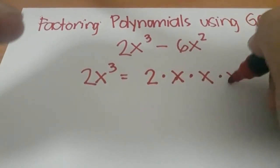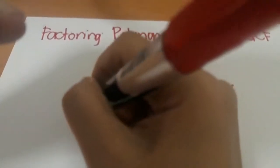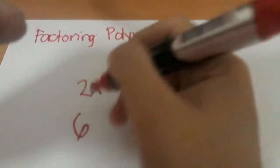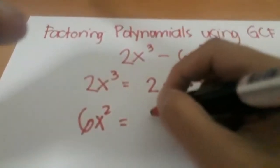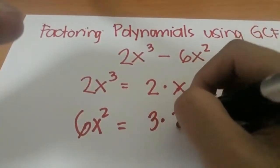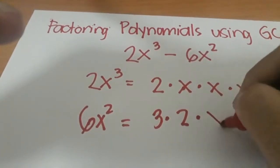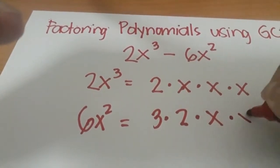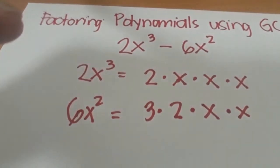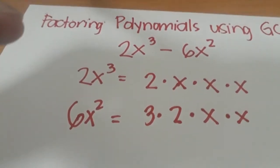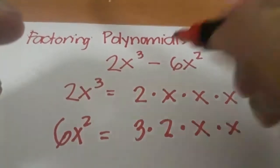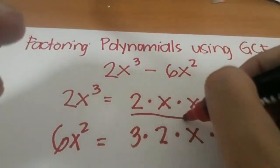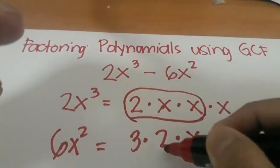And then for 6x², it is 3 times 2 times x times x. So the greatest common factor for this polynomial is the common to them, which is this one.